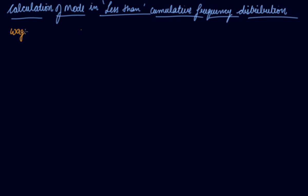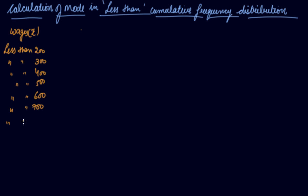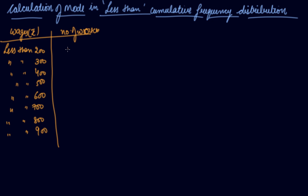We've got wages in rupees given as: less than 200, less than 300, less than 400, less than 500, less than 600, less than 700, less than 800, less than 900. The frequency, that is number of workers, is 5, 18, 38, 70, 90, 95, 98, and 100.